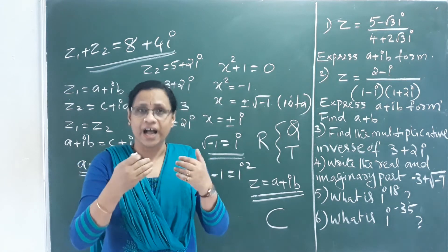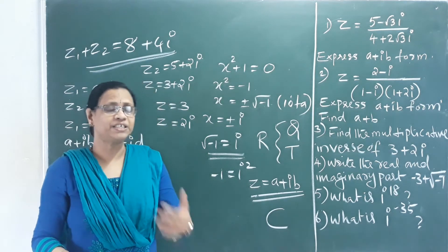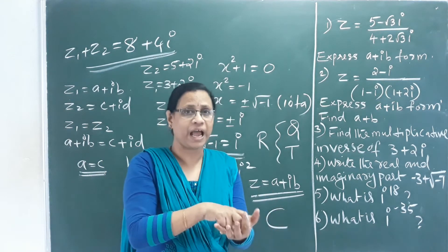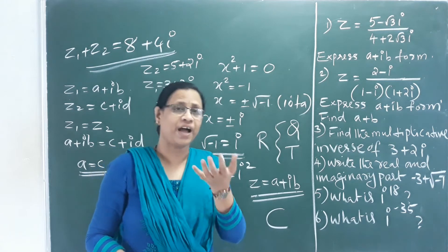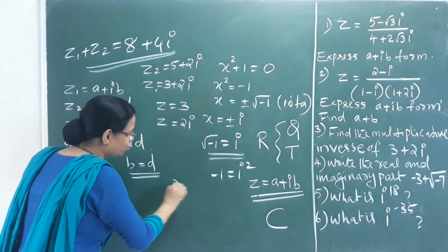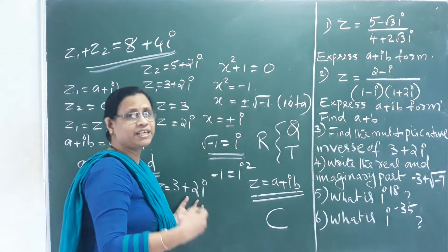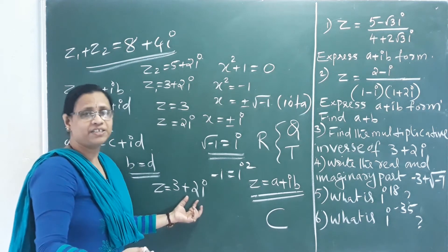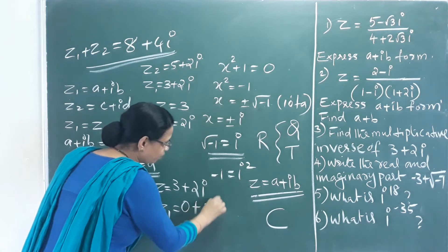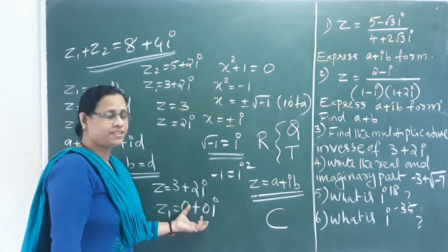The properties of addition are: closure property, commutative property, associative property, identity, and inverse. The additive identity is 0, because adding 0 + 0i to any complex number gives the same complex number. So Z₁ = 0 + 0i is the identity of addition.